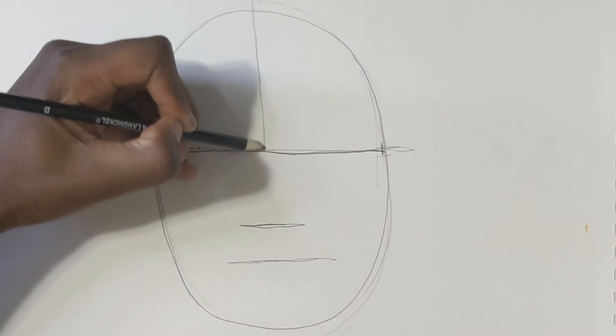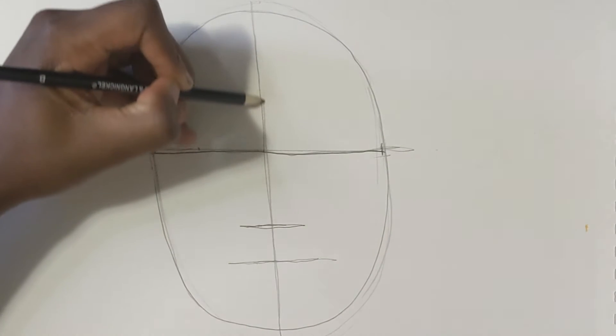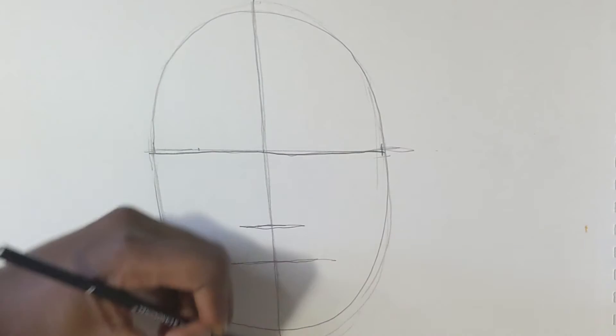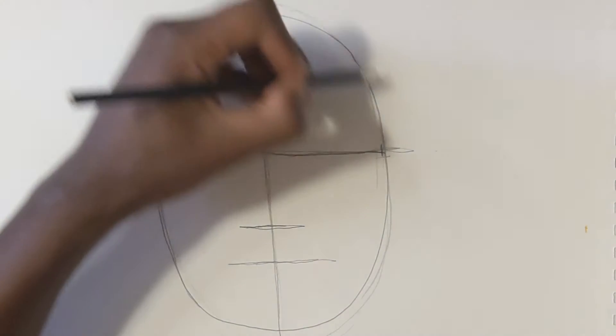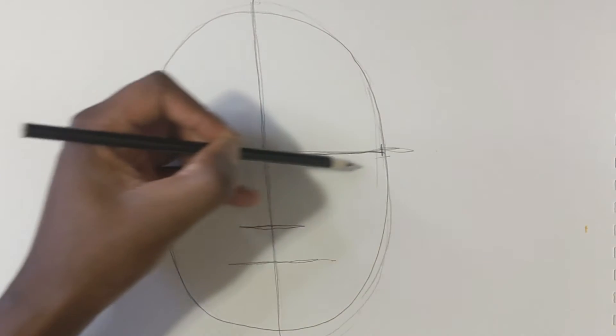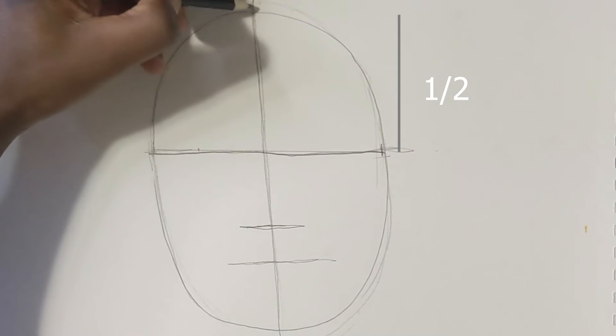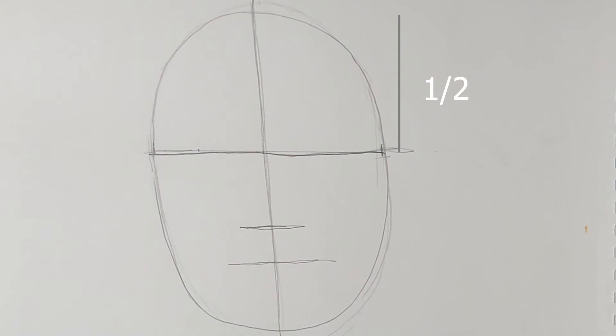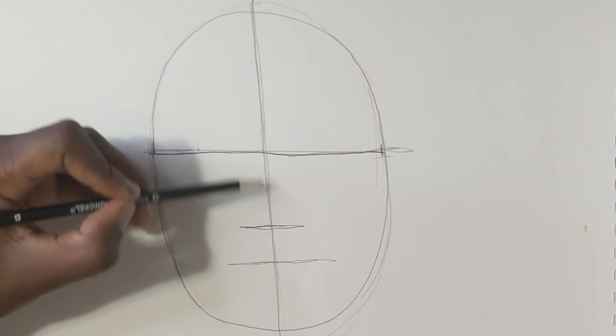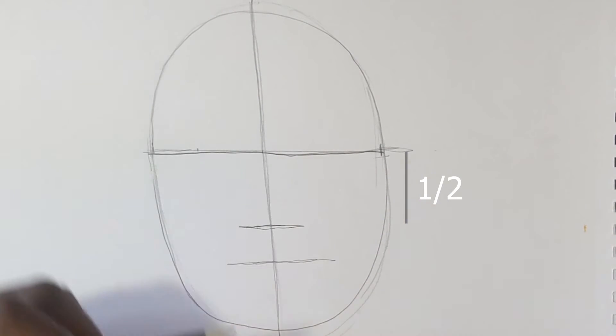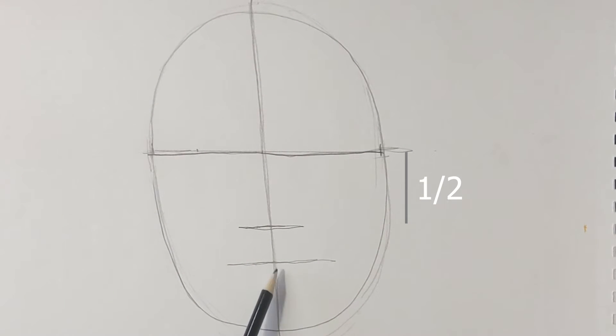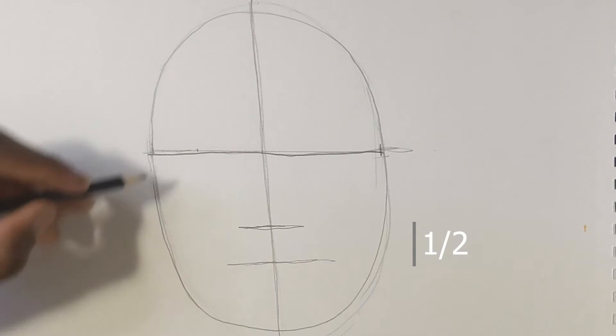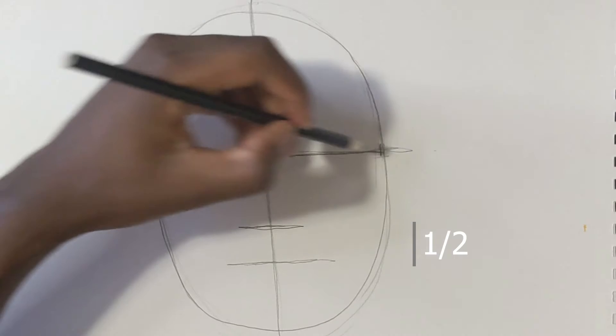Let's recap: you start with an oval shape, cut it in half with a horizontal line, cut it in half with a vertical line. The bottom of the nose is halfway between the chin and the eye line, and the middle of the mouth is halfway between the nose and the chin. I'll try to put those numbers up when we edit this video.